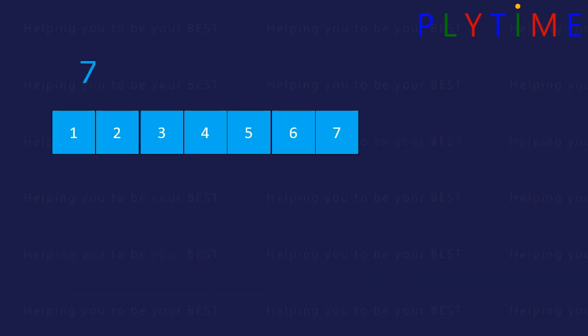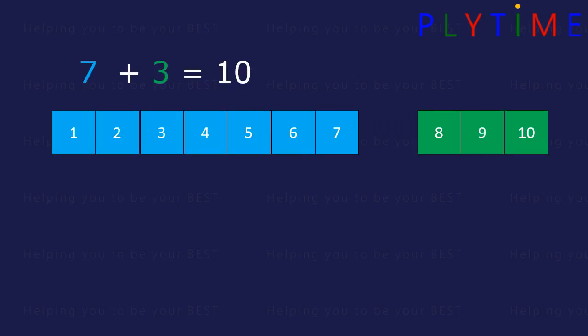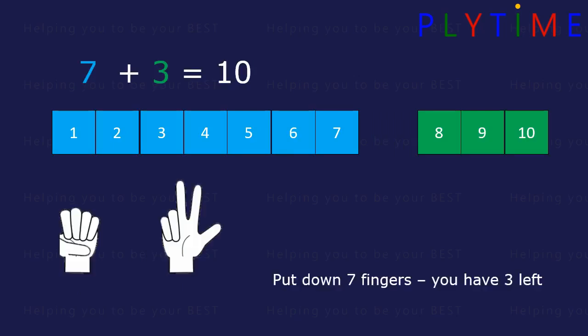7 add 3 is 10. Put down 7 fingers. You still have 3 left up. 7 and 3 is 10.